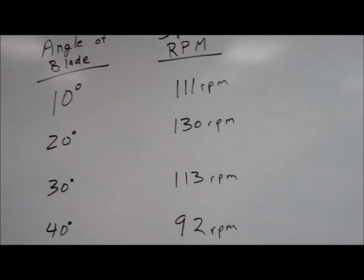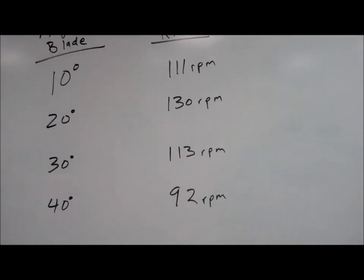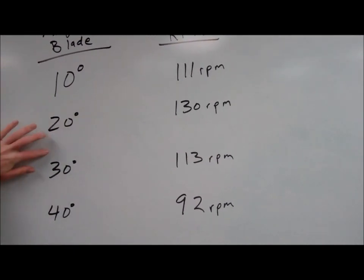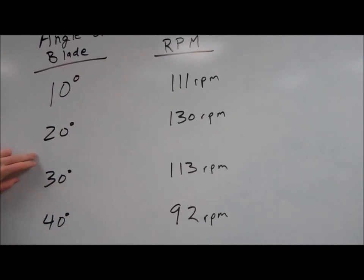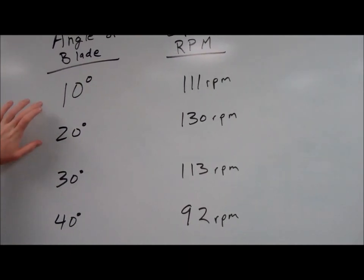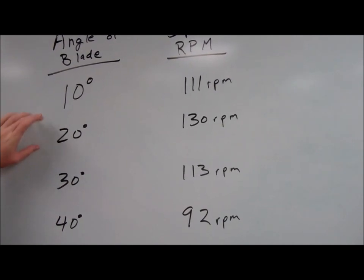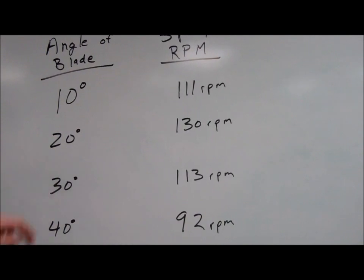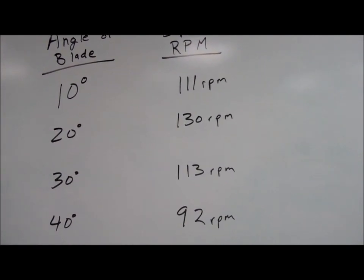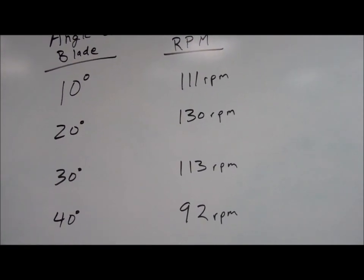Once you figured that out where'd you go from there, Loren? I decided to split the difference, so I went 15 and 25 and I found that both were still slower than 130, so I kept getting closer to 20 until I found about 21 degrees was the fastest at a little over 130 RPMs.